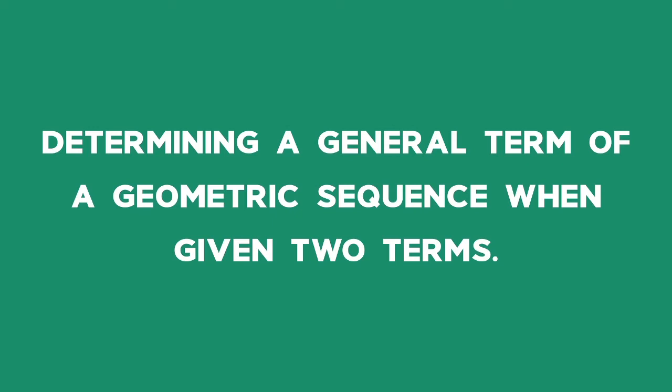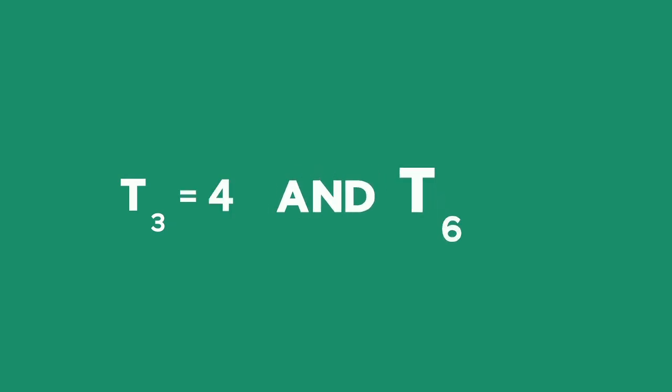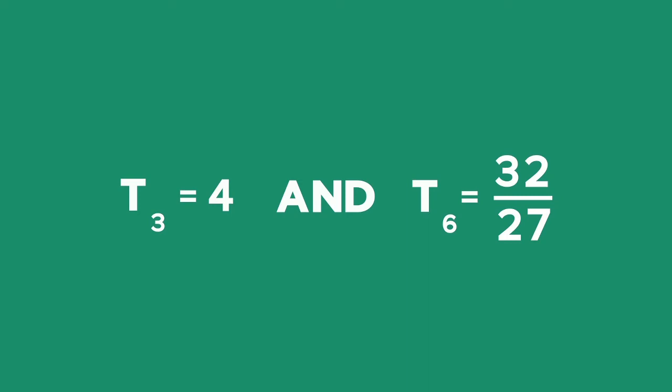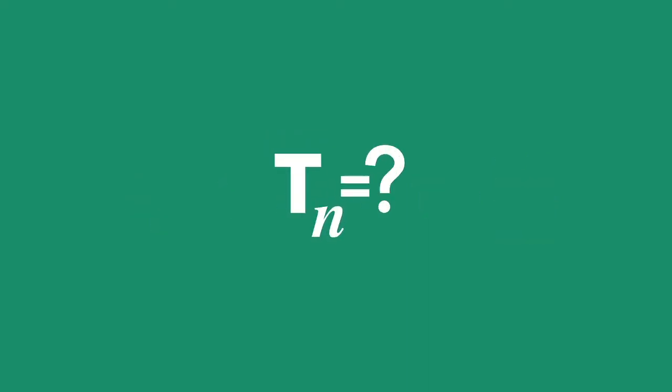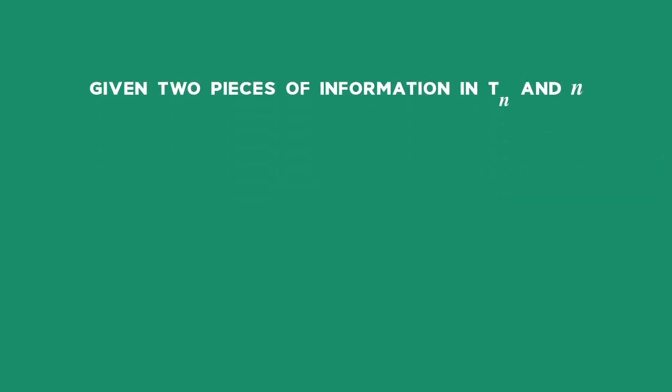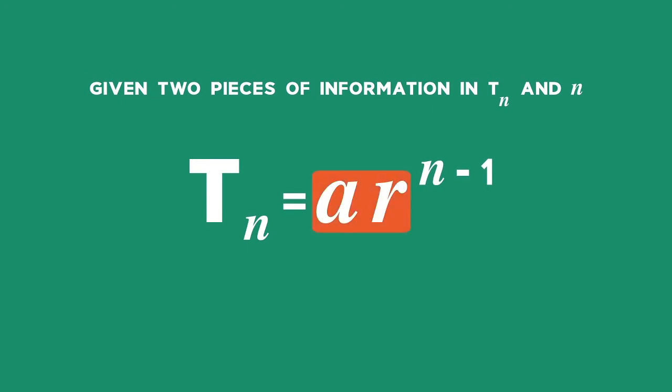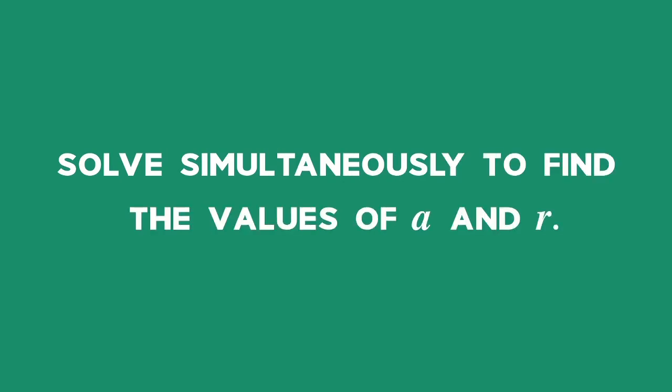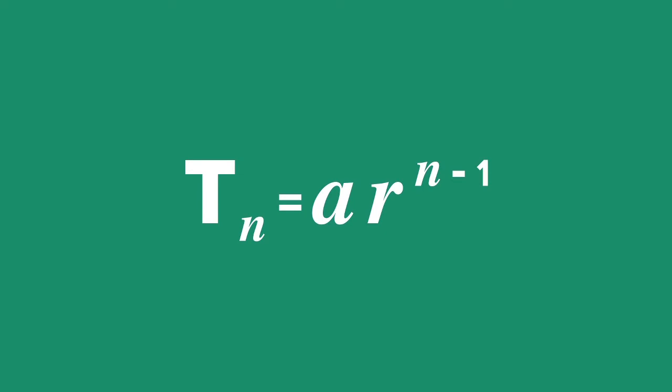Example 3: Determining a general term of a geometric sequence when given two terms. The third term of a geometric sequence is 4, and the sixth term is 32 divided by 27. Find the nth term. Solution: We are given two pieces of information, so our goal is to express all unknowns in terms of a and r, then solve simultaneously. This type of question comes up often. Using the general term Tn equals a times r to the power of n minus 1, and the given information, we can write out two equations.